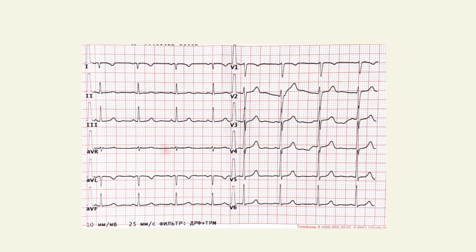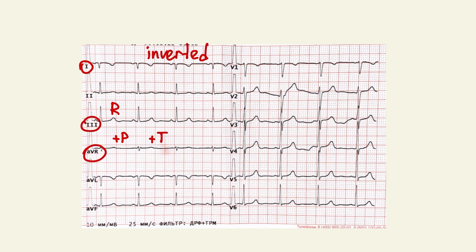If you see a positive P wave and positive T wave at lead AVR, inverted lead 1, and right axis deviation — it's a lead misplacement, and you need to record a new ECG.